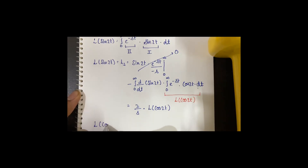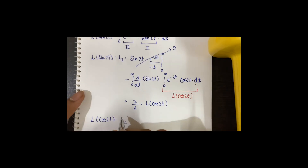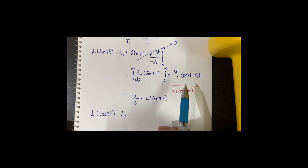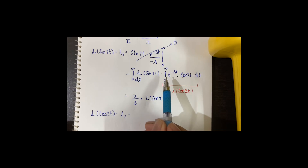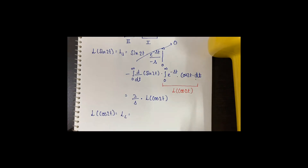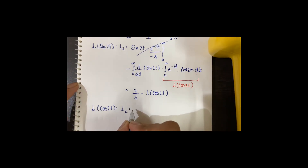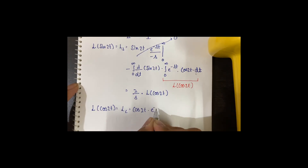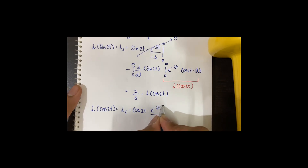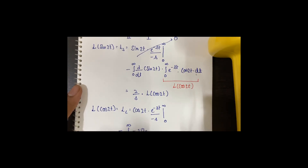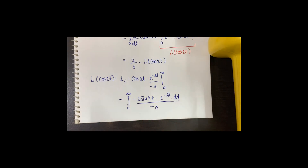The Laplace of cos 2t, LC, also needs to be solved using the by parts method, where cos 2t is the first parameter and e to the power minus st is the second. Applying by parts gives cos 2t times e to the power minus st divided by minus s, evaluated from 0 to infinity, minus the integral of 2 sin 2t times e to the power minus st dt divided by minus s. Since 2 and s are constants, they come out of the integral and the negative signs get neutralized.